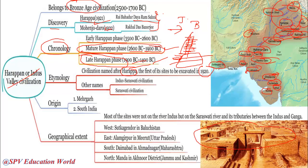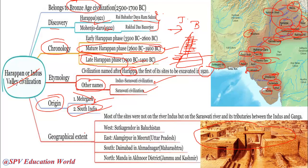Other names of the Harappan Civilization include Indus Valley Civilization and Saraswati Civilization. Regarding origin, it is assumed to have originated in Mehrgarh in South India — though these are assumptions. Evidence suggests the people may have been Dravidians or from South India, and due to the influx of Aryans, they moved into South India. However, there is no valid proof for this.